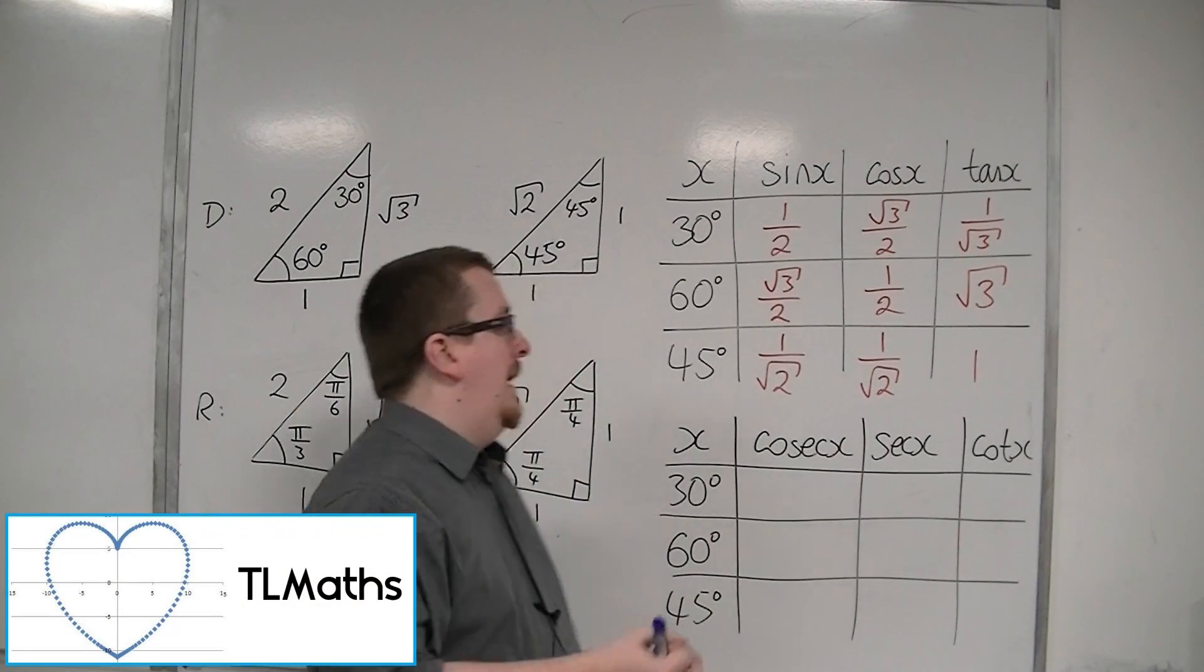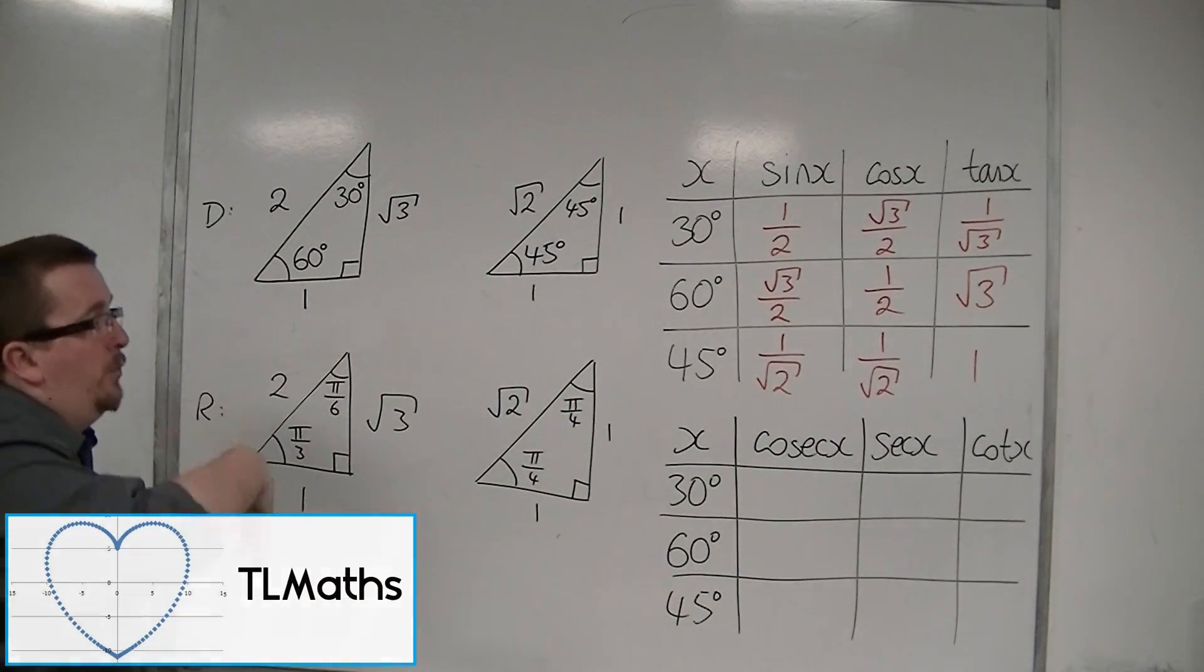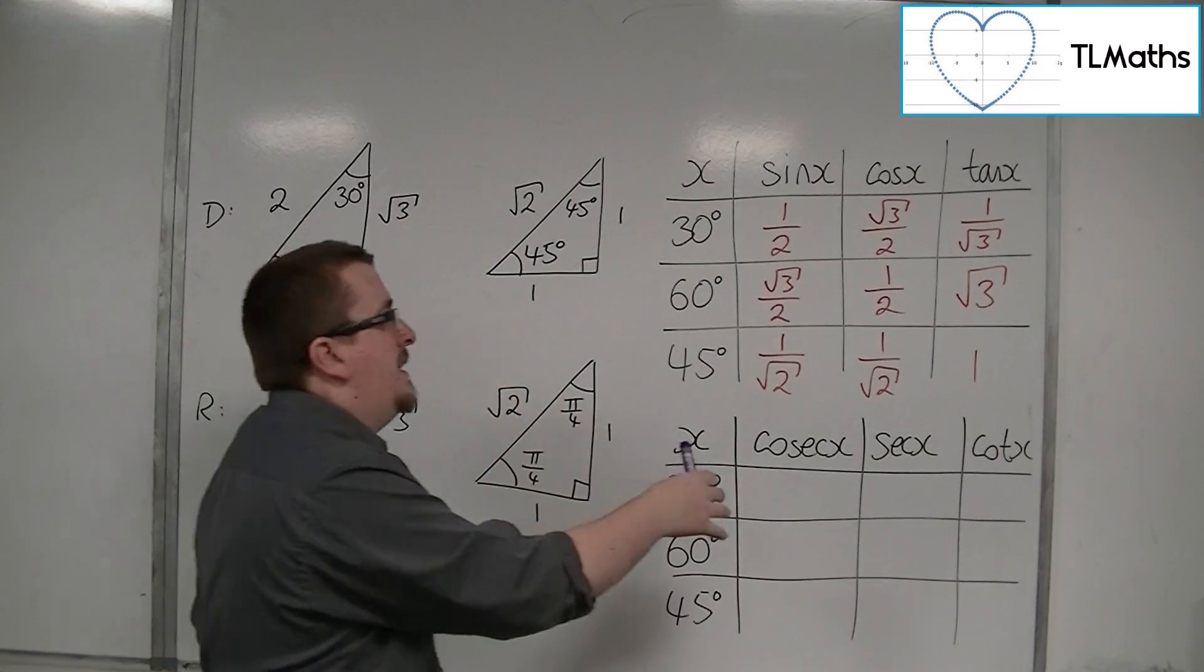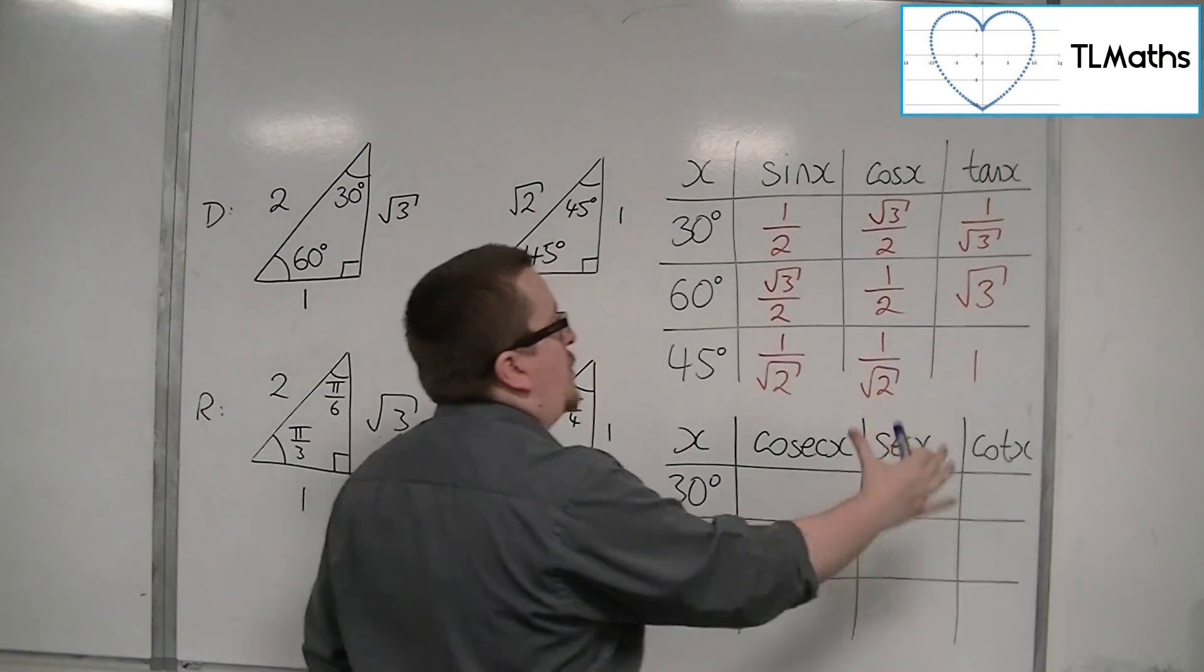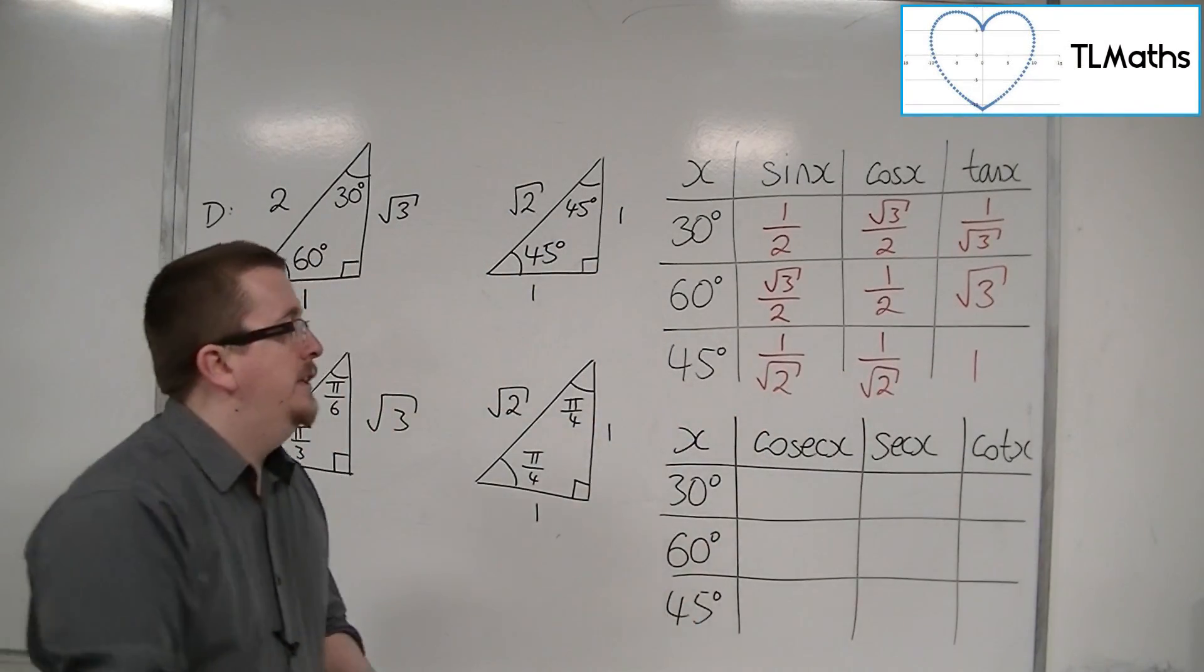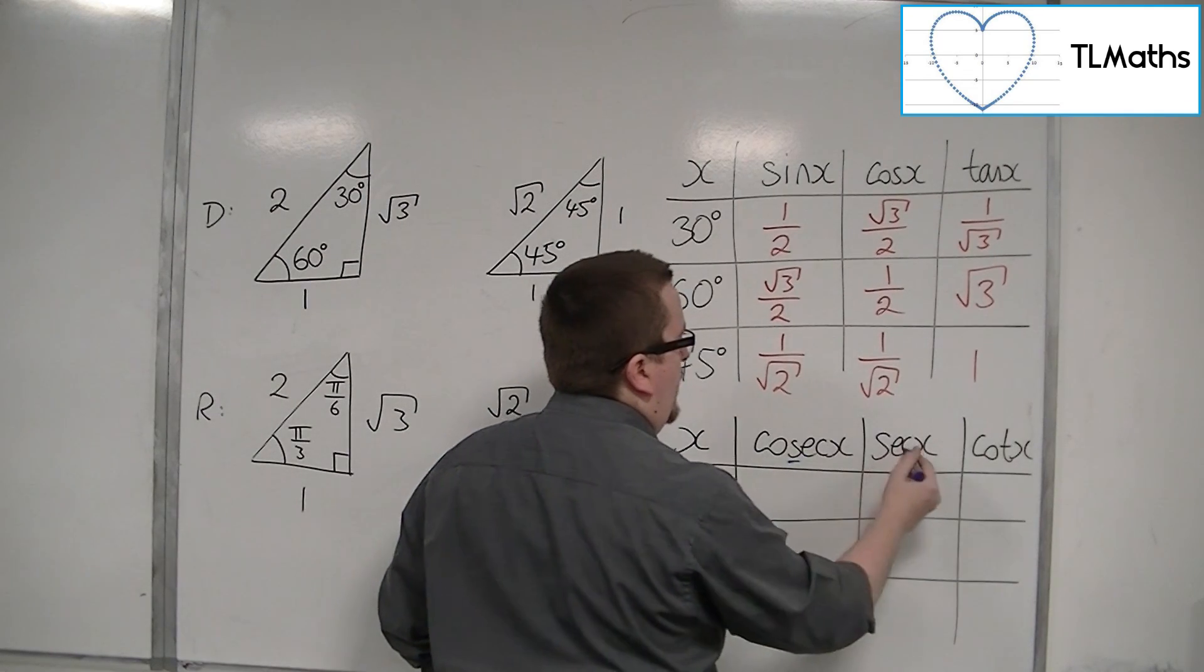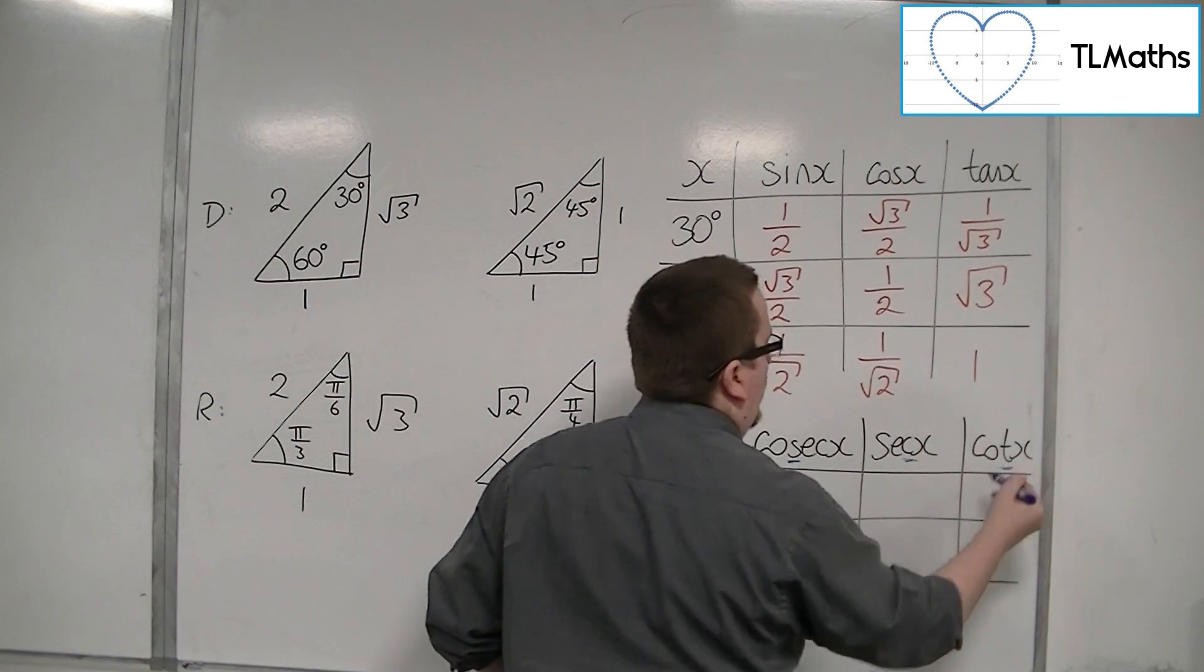So we now know that cosec is 1 over sine, sec is 1 over cos, and cot is 1 over tan, using the third letter rule. So 1 over sine, 1 over cos, 1 over tan.